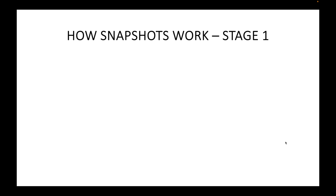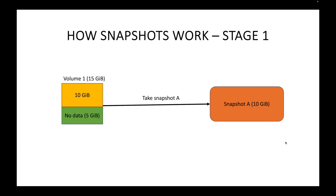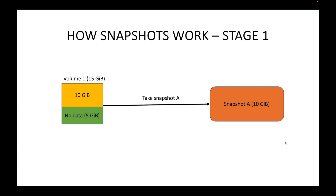Let's walk through an example. In Stage 1, we have an EBS volume with a capacity of 15 GB, and it contains 10 GB of data — the remaining 5 GB is empty. At this point we take a full backup for the first time, creating Snapshot A.